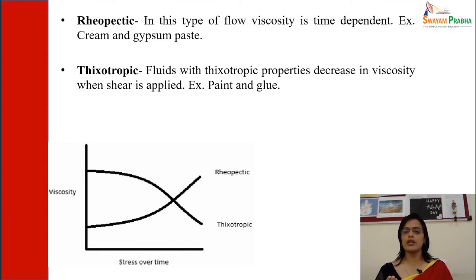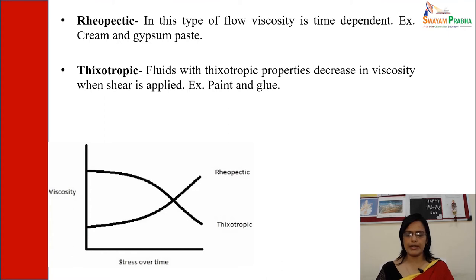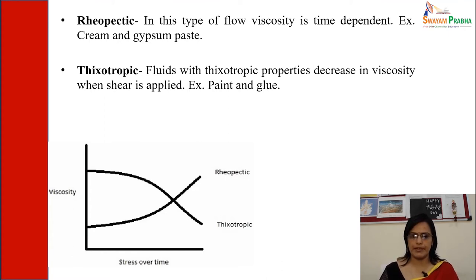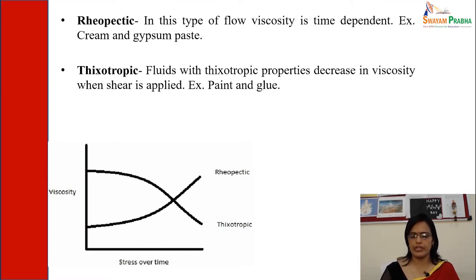Thixotropic flow: fluids with thixotropic properties decrease in viscosity when shear is applied, and this is also time-dependent. Examples include paint and glue.